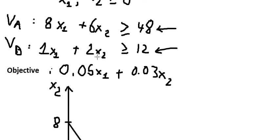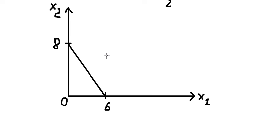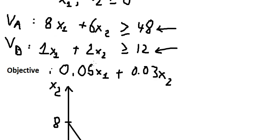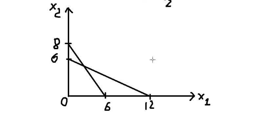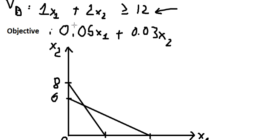For the second constraint, when s2 equals zero, s1 is 12, so 12 is plotted here. When s1 equals zero, s2 is 6, plotted here. We connect the two lines, and because this is greater than or equal to, the feasible region is above these lines.